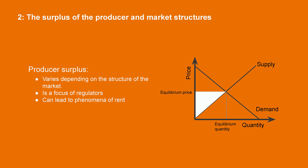Let's focus on the surplus of the producer. It varies depending on the structure of the market. Regulators will focus on it a lot. Indeed, this is because the producer surplus may be expanded in a situation where a firm uses its position on a market to make extra profits, sometimes referred to as a rent.